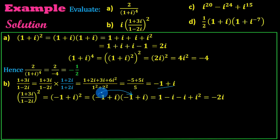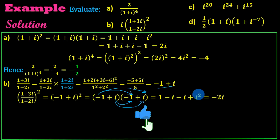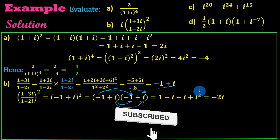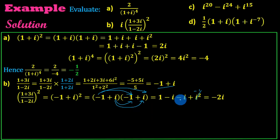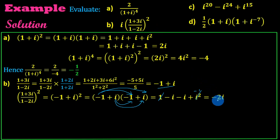Minus one plus i times minus one plus i. Expanding: minus one times minus one is plus one, minus one times i is minus i, i times minus one is minus i, and i squared equals minus one. So we get one minus i minus i plus minus one. That gives minus 2i. By simplified form, 0 minus 2i in a plus bi form.